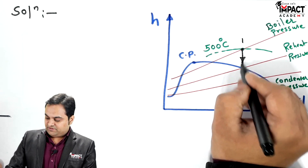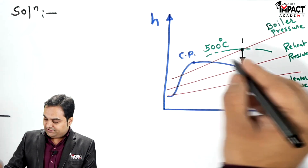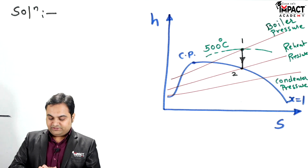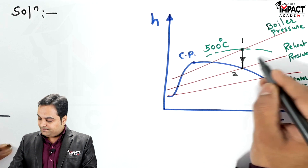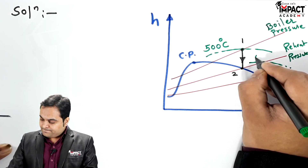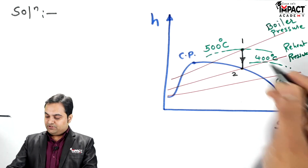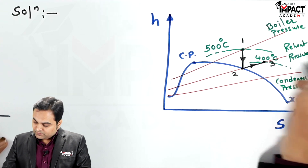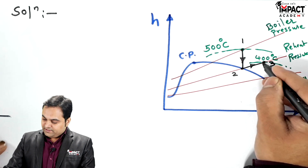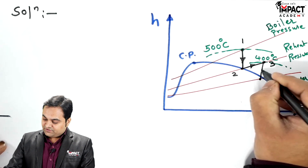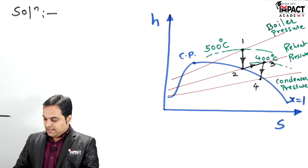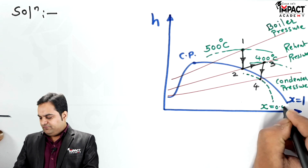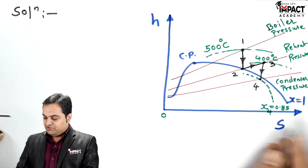From point one to two, the steam expands in the high pressure turbine. At entry the steam is at 500 degree Celsius, and at exit it is dry saturated — so point two lies on the dry saturation curve. The steam is then reheated to 400 degree Celsius, so where the 400 degree Celsius line intersects the reheat pressure gives point three. From point three the steam enters the LP turbine and expands to point four, which has a dryness fraction of 0.85.